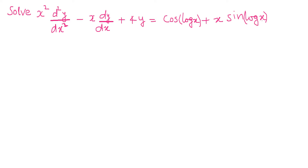The question is: how do we identify if the equation is of Cauchy-Euler form? In Cauchy-Euler form, the dy/dx term will have x as coefficient and the d²y/dx² term will have x² as coefficient. This is how we identify the given equation as Cauchy-Euler form. Here, d²y/dx² has x² as coefficient and dy/dx has x as coefficient. Therefore, this is a Cauchy-Euler equation.